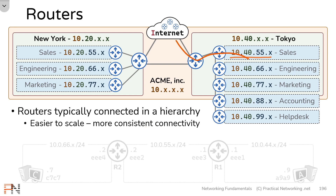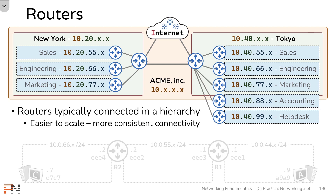The sales team is going to have a faster time getting to the internet than your helpdesk. Plus if some sort of failure event happens at the marketing router, that happens to cut off access to the rest of the network for all the teams deployed after the marketing network. You don't have those problems if your routers are deployed in a hierarchy.